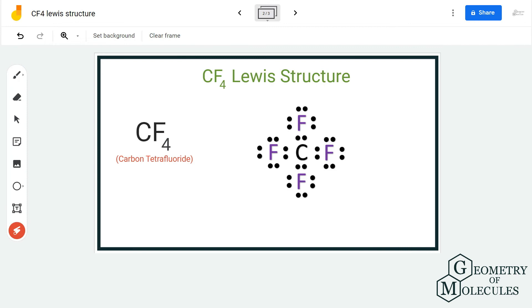If you check this structure, carbon has a complete octet because it has eight valence electrons in its outer shell, and all fluorine atoms also have eight valence electrons in their outer shell. This is the most accepted and stable Lewis structure for CF4.